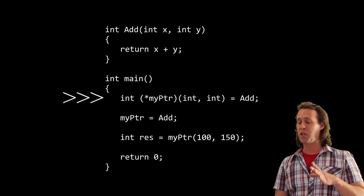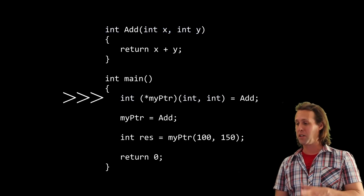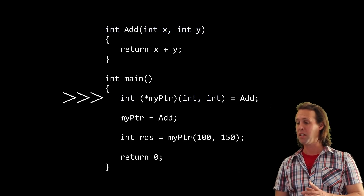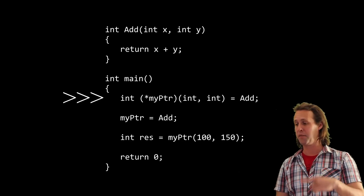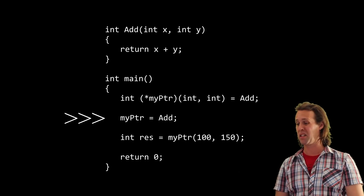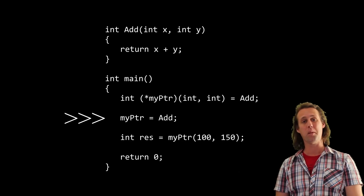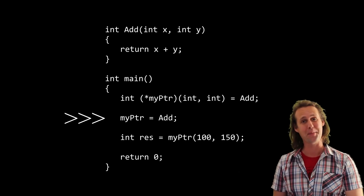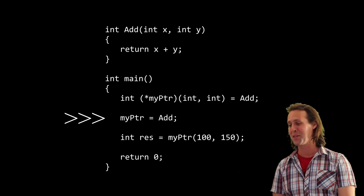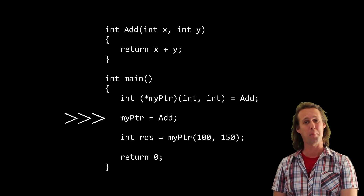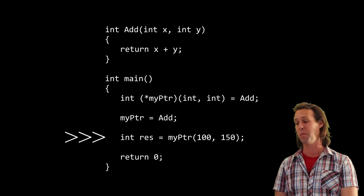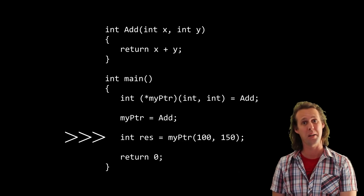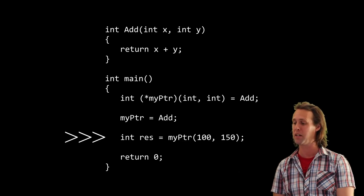After you've declared your function pointer, you could point it to the add function with something as simple as myptr equals add. And then the interesting part — once your function pointer is actually pointing to some useful code, you can execute your function pointer as though it was a normal function.